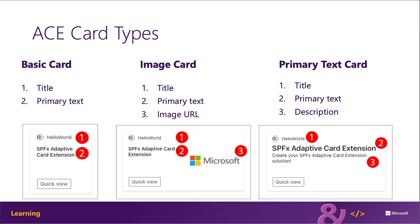The image card template supports three properties. The first is the title of the ACE, the second is the primary text of the ACE providing context to the user, and the third is the image URL of the image displayed on the card. When the card size is set to large, the image is rendered to the right of the card. When the card size is set to medium, the image is rendered above the card's title.